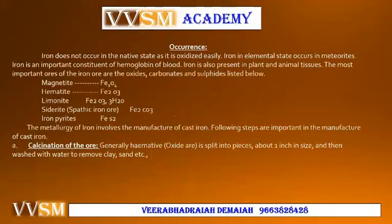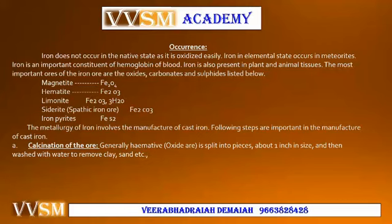Iron does not occur in the native state as it oxidizes easily. Iron in its elemental state occurs in meteorites. Iron is an important constituent of hemoglobin in blood. Iron is also present in plant and animal tissues. The most important ores of iron are the oxides, carbonates, and sulfides: magnetite Fe₃O₄, hematite Fe₂O₃, limonite Fe₂O₃·3H₂O, siderite (spatic iron ore) FeCO₃, and iron pyrites FeS₂. The metallurgy of iron involves the manufacture of cast iron.